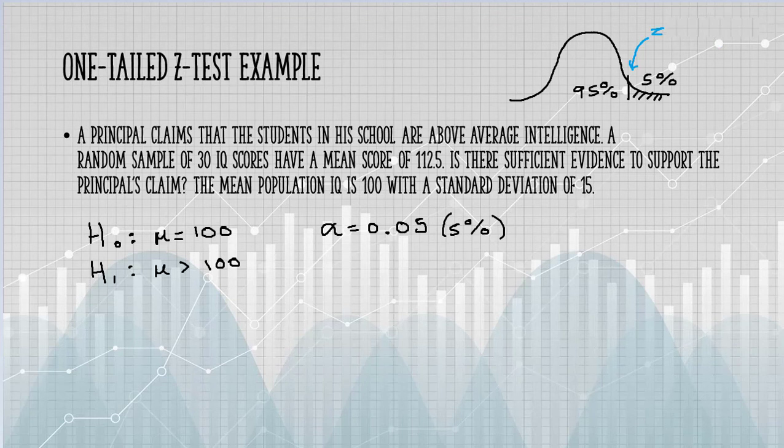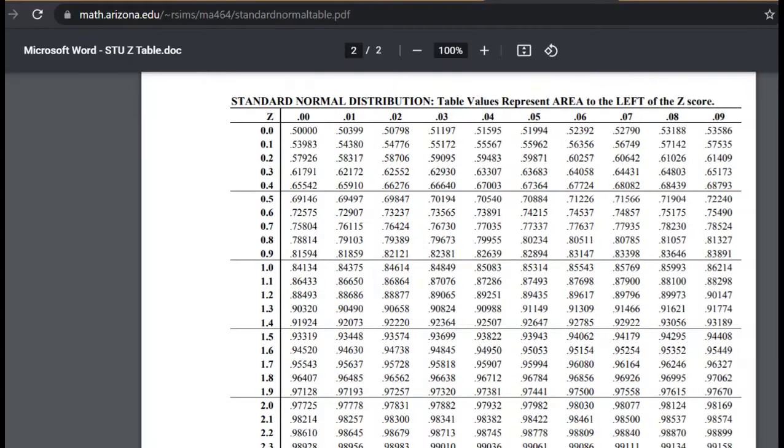There are several different kinds of Z tables, so make sure you're looking at the one that says area to the left of the Z score. We're looking for an area of 95%, and you're going to find that in the center of the Z table.